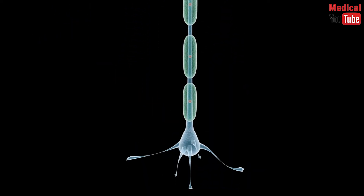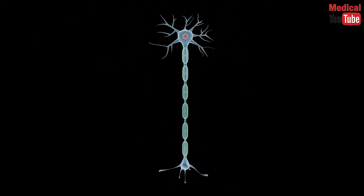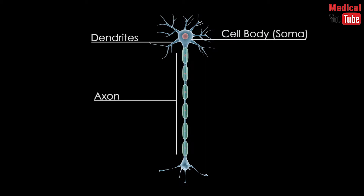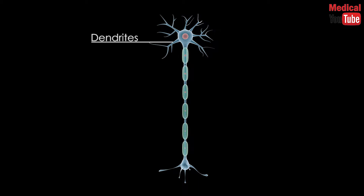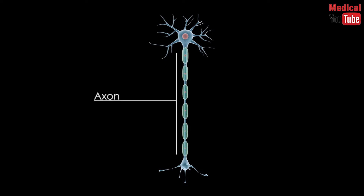A typical neuron consists of three main parts: a cell body, dendrites, and an axon. The cell body, also known as the soma, contains the nucleus. Dendrites are thin structures that arise from the cell body, often extending for hundreds of micrometers and branching multiple times, giving rise to a complex dendritic tree.